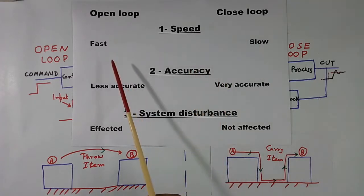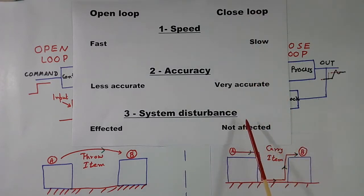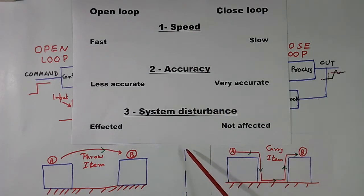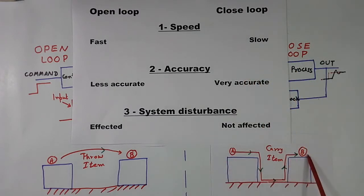This is the comparison chart. Left side is open loop. Right side I have written closed loop. Let us see the first point: Speed. Now without any knowledge, any layman can tell, here this system is faster, this is slower. It will take longer time. Open loop systems are fast. Closed loop systems are slow, because they take longer time.